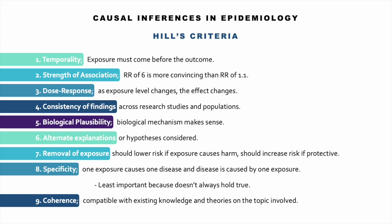If there's a dose-response effect — meaning that as the exposure level changes, the effect changes — this provides supportive evidence of a causal relationship. Findings across research studies and populations should be consistent; if one study found a strong association but others didn't, that would not support a causal association. It should be plausible — the biological mechanism should make sense. Alternative explanations should have been considered. Removal of the exposure should lower the risk if it causes harm, and increase risk if it's protective. Specificity means one exposure causes one disease, but this is the least important criterion because it often doesn't hold true. Finally, coherence: the findings should be compatible with existing knowledge and theories.